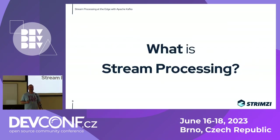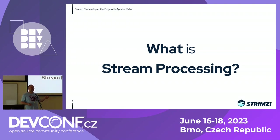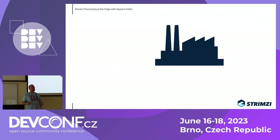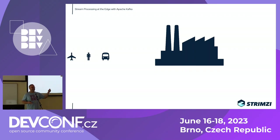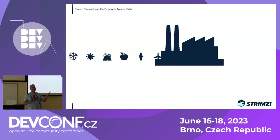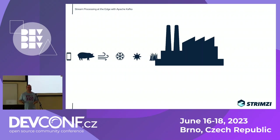How many of you know what stream processing is? For those who don't know, you can try to imagine it as the world around us being full of different streams of events and data. For example, in a room like this, when someone opens a door, that's an event. When someone enters or leaves the room, that can be another event. You can take these events and process them as a stream — counting how many people are in the room.